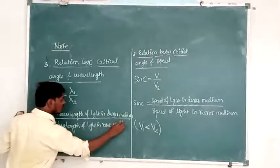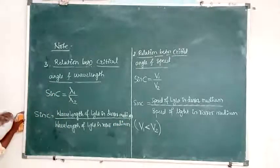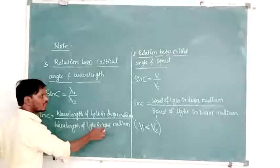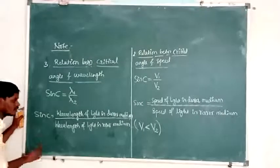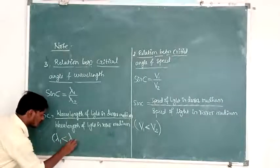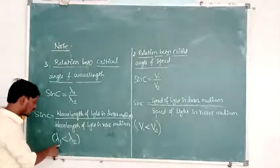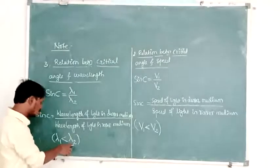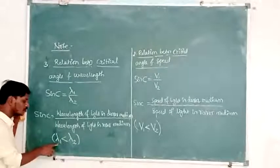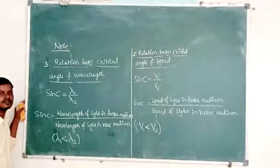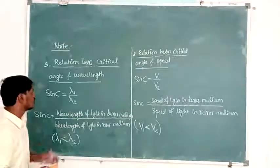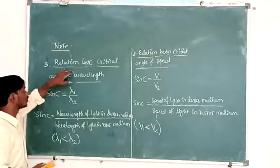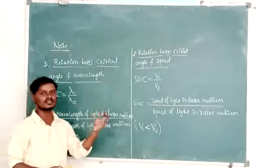In the medium where the speed of light is maximum, the wavelength of light is also maximum. So lambda 2 is greater than lambda 1, meaning lambda 1 is less than lambda 2. Subscript 1 stands for the denser medium and subscript 2 stands for the rarer medium. In the denser medium the wavelength is minimum; in the rarer medium the wavelength is maximum, because speed and wavelength are directly related. This completes the relations between critical angle, refractive index, speed, and wavelength.